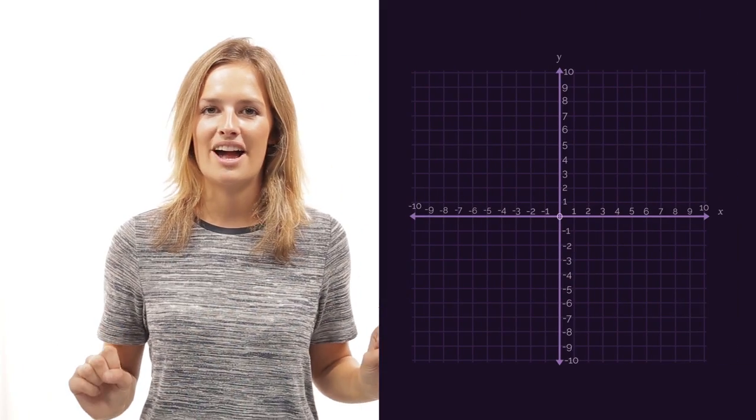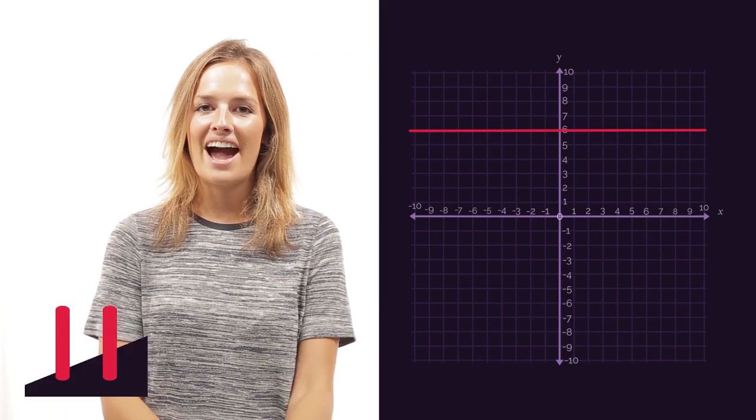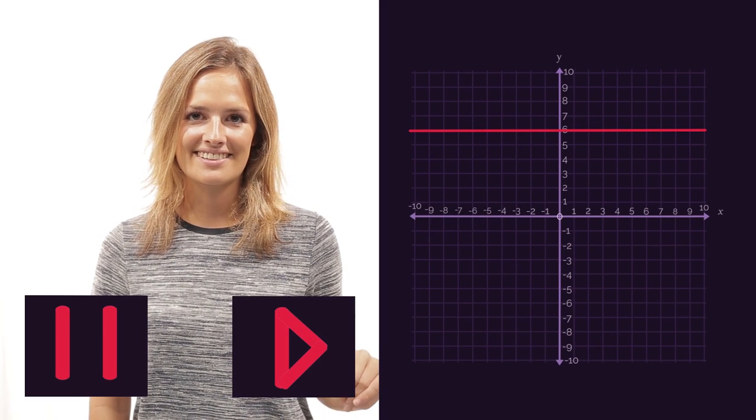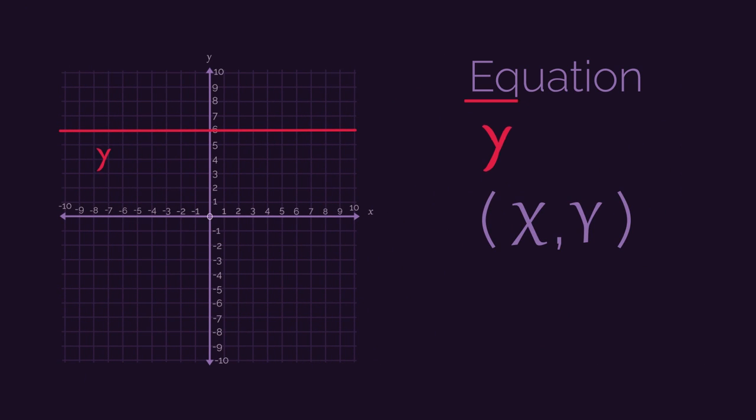So what do you think the equation of this horizontal line will be? Pause the video, have a think, and click play when you're ready to check. Did you think it was y equals 6? Because all of the points on the line have a y-coordinate of 6. Hence, y equals 6.